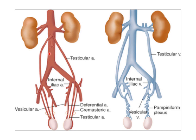This is the abdominal aorta, and these are the right and left testicular arteries supplying the concerned testicles. This is the external iliac artery, and this is the cremasteric artery — a branch from the external iliac artery — supplying the concerned testicle on both sides.